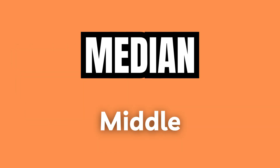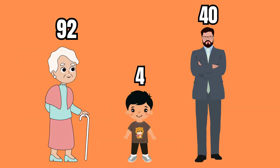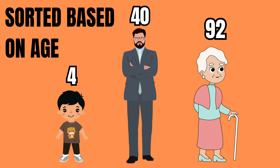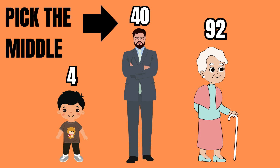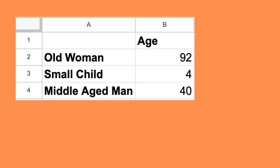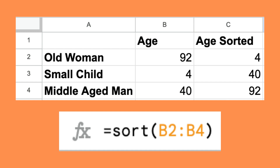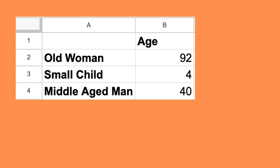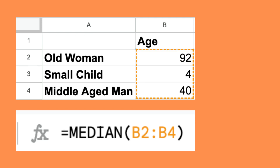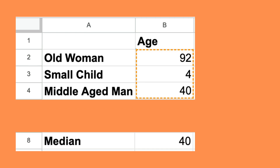The median is even simpler to get. We just sort the population from youngest to oldest and pick the value that is literally in the middle. This can be done easily in Excel by using the sort function and then manually picking the middle value, or even easier by just using the median function and selecting the data range of interest, like so. Then we see that the median age of this population is of course 40.